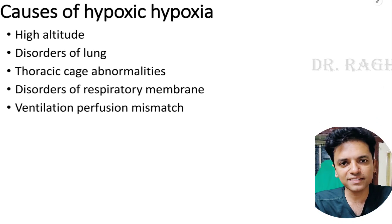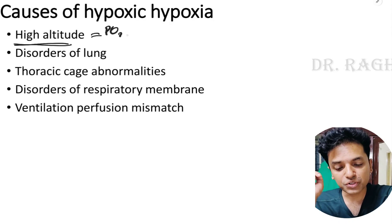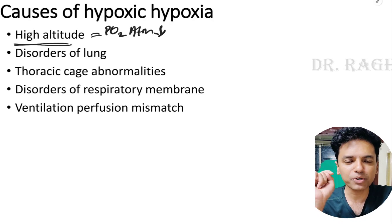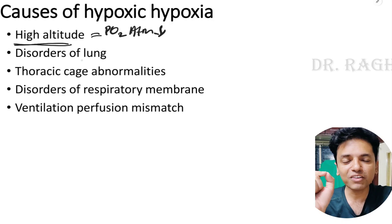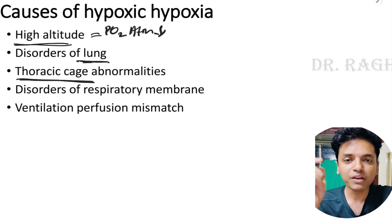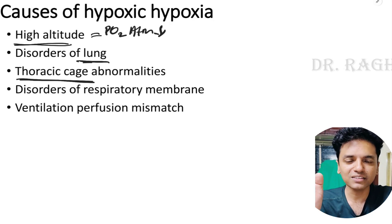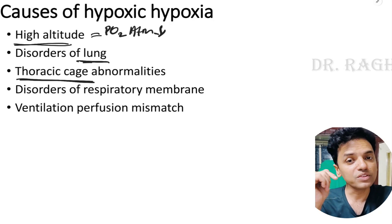Causes of hypoxic hypoxia include: high altitude, where atmospheric pO2 is less; disorders of the lungs and thoracic cage — respiratory paralysis from conditions like myasthenia gravis, congenital anomalies like kyphosis or scoliosis, and trauma such as multiple rib fractures — all of which impair alveolar aeration.